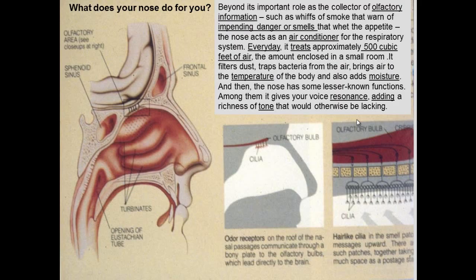The nose is very important for respiratory function. Olfactory cells detect danger from bad odors and help stimulate digestive juices by smelling food. It also conditions air — moistens and cleans it — processing about 500 cubic feet of air, approximately the volume of a small room. As air flows around the turbinates it spins, and the heavier dust particles are thrown against the sides and caught in the mucus by centrifugal force to be washed away.